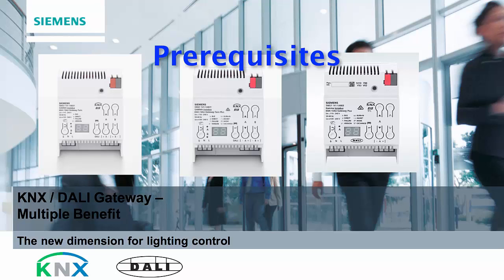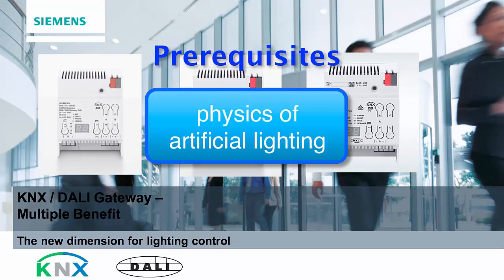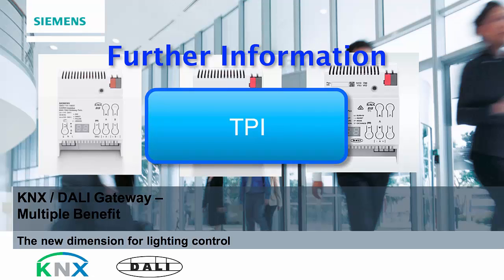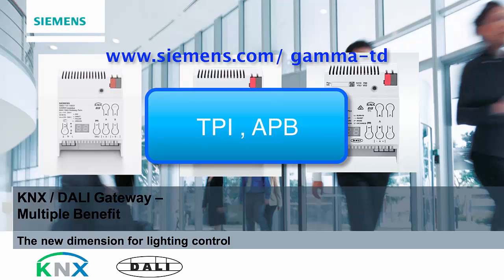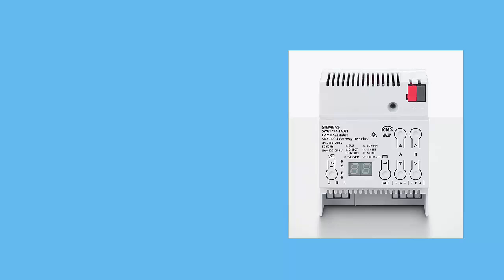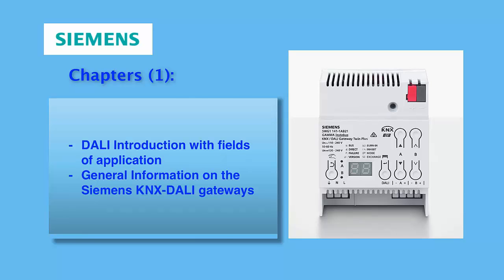Prerequisites: successful completion of a KNX basic course, and profound knowledge of current ETS 5. Some basic knowledge about the physics of artificial lighting. Further information and downloads of instruction manuals are available from the Siemens GAMMA technical documentation website, including Technical Product Information (TPI), Application Program Description (APD), and Installation Instructions. The website is www.siemens.com/gamma-TD.